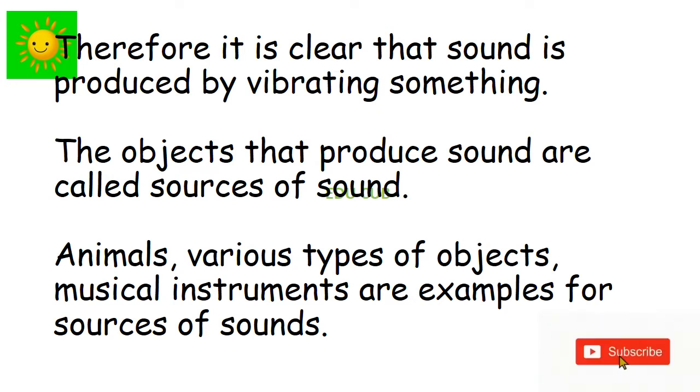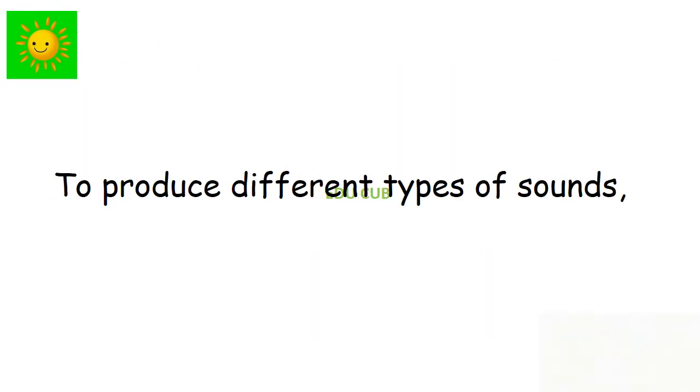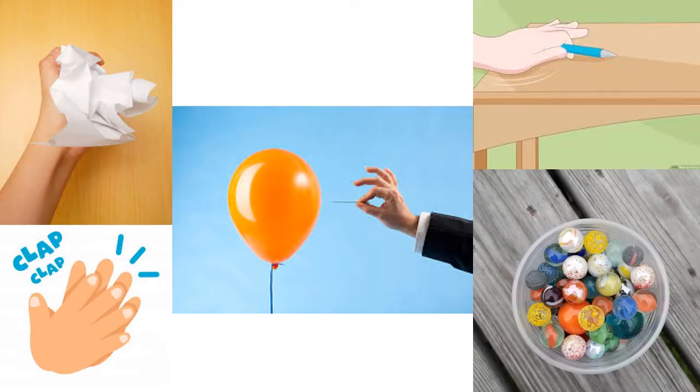The objects that produce sound are called sources of sound. Animals, various types of objects, musical instruments are examples for sources of sound. To produce different types of sound, there are activities. Tap the desk with a pencil or pen. Clap your hands. Put some marbles or some green gram into the yogurt cup and shake it. Crush the piece of paper with hand. Burst a balloon. As shown in this activity, we can produce sound even by using simple methods.